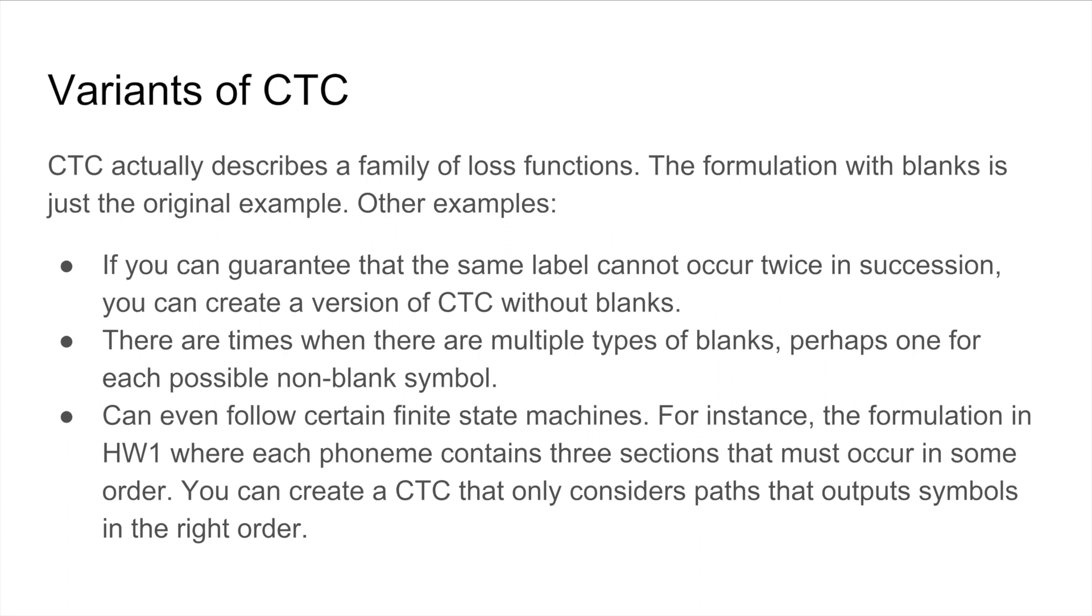So in fact, the formulation that we've just described is not the only formulation of CTC that exists. The setup in which we introduce a blank character and design this collapsing function from the set of possible outputs to the set of labelings is actually just what's described by the original paper authors. And the CTC loss doesn't limit us to that. And there are actually other ways that we can place constraints on our outputs that are useful that don't follow this method, even though the methods that we've described are very common and implemented natively in some of the frameworks that we're going to use. So for example, we can get rid of the blank. I mean, if we can guarantee that the same label can't occur twice in succession, which is the case for some symbol varieties, then we can just create a version of CTC without blanks. And there are times when it can be useful to have many different kinds of blanks, perhaps one for each possible non-blank symbol.